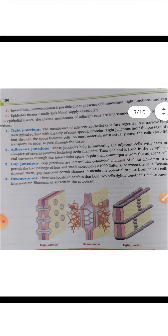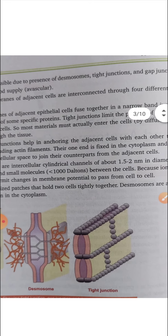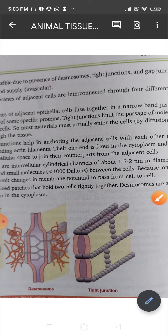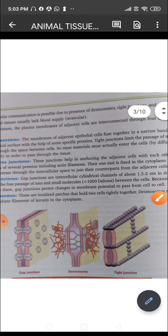The fourth characteristic is intercellular communication. Communication between cells is possible due to the presence of desmosomes, tight junctions, gap junctions, and adherence junctions. These structures help in the transfer of certain substances between cells. We will now go into the detail of what these tight junctions and others are.